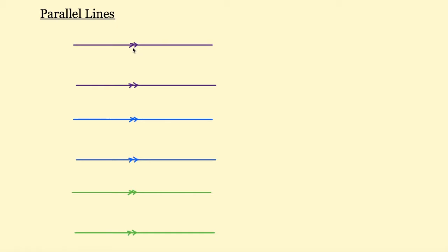Looking at the first set of parallel lines here - we know they're parallel because of these little arrows, these symbols tell us that they're parallel. Let's pretend they're train tracks and you're walking across this set of train tracks. You start on this side and walk in a perfectly straight line across the first rail, keep walking and cross the second rail. As you haven't turned your body in any way, we know that the angle you crossed the first rail must be the same as the angle you cross the second rail.